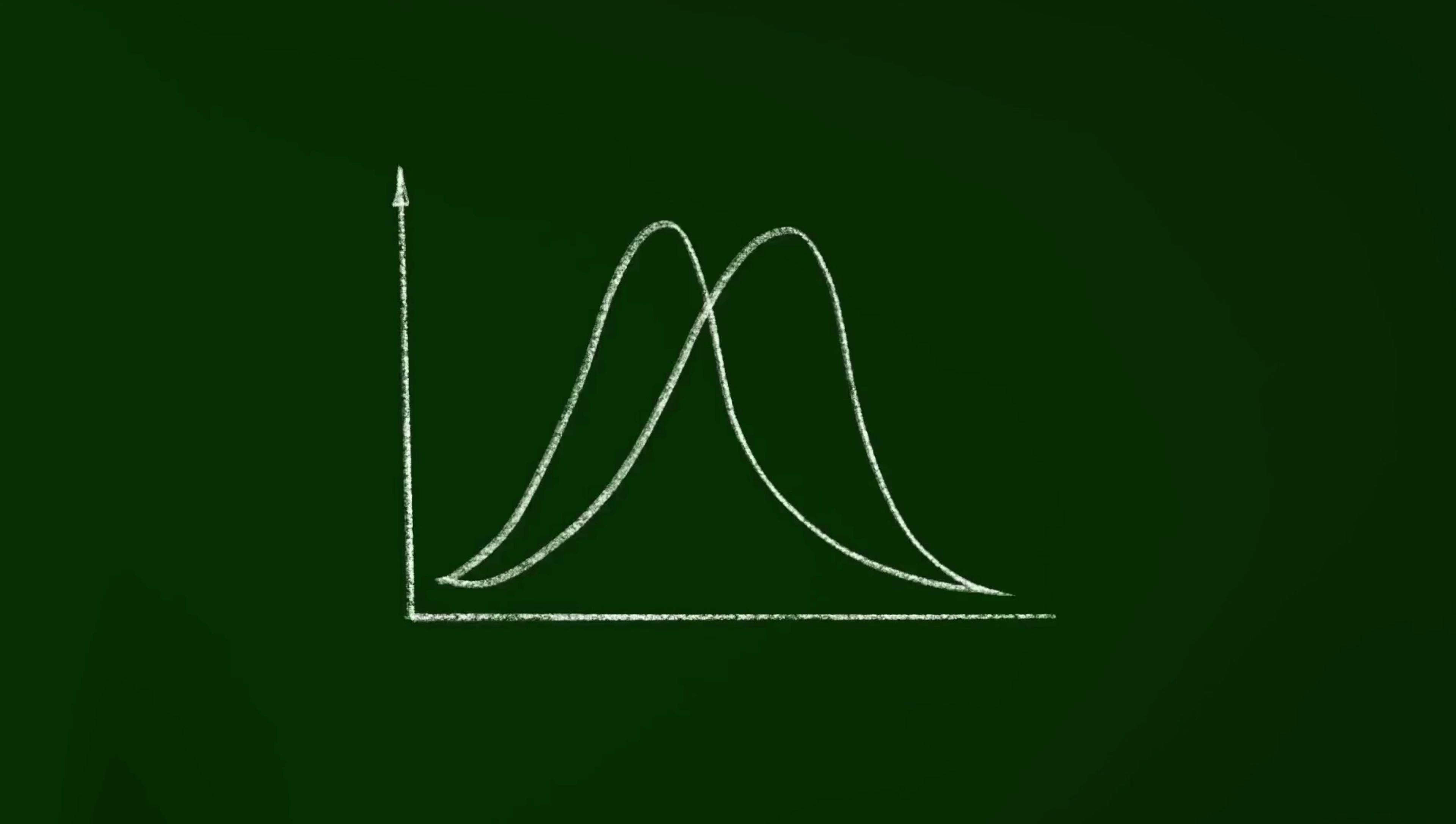It's called a bell curve because when you plot the data, it forms a bell-like shape. It's symmetrical, with the highest point representing the mean, median, and mode of the data.